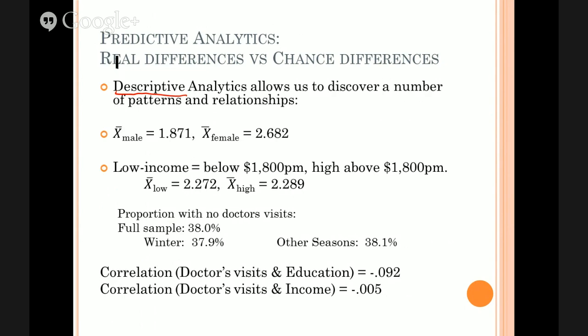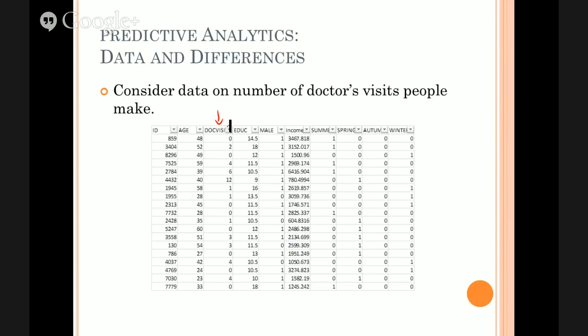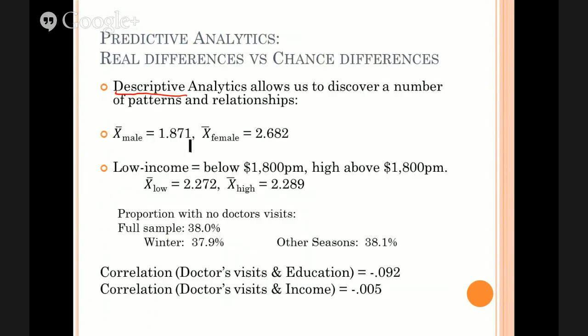We discover some patterns and relationships. For example, if we take this set of data and look at the number of doctor's visits and divide that up by gender — looking at males first, then females — the average number of visits for females is much higher than for males: 2.7 versus about 1.9, so 0.8 bigger — quite a lot bigger. On average, females visit the doctor 0.8 times more per quarter than males. That's quite a big difference.